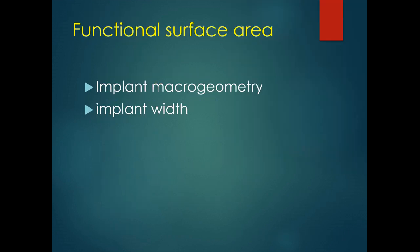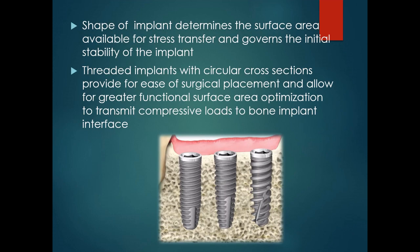Under functional surface area we have to discuss the two important design variables that optimize the surface area. One is the implant macro geometry and then the implant width. The implant macro geometry topic has been discussed along with thread geometry as a separate session, so here I will not be discussing in detail about the macro geometry of the implant.